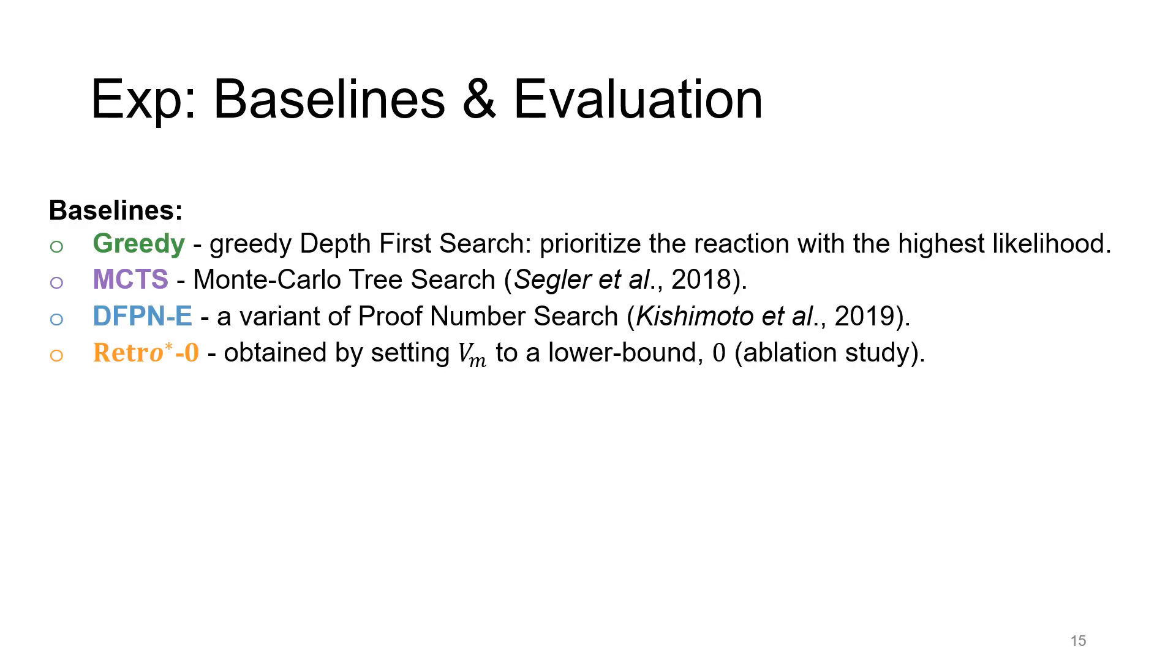We compare RetroStar with greedy DFS, which prioritizes the reaction with the highest likelihood, and with MCTS, which is Monte Carlo Tree Search, and with DFPN, which is a variant of proof number search. Both MCTS and DFPN are two popular methods for retrosynthetic planning proposed in recent years. We also include RetroStar 0, which is an ablation study obtained by setting Vm to a lower bound 0. This is the not-learned version of RetroStar.